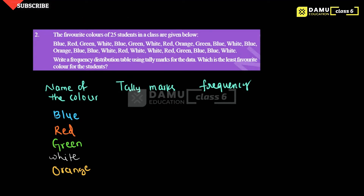First, blue color. How many times does blue appear? We write the tally marks for blue one by one: 1, 2, 3, 4, 5 — strike through — then 6, 7, 8. So what is the frequency? Five plus three is eight. Blue has a frequency of 8.